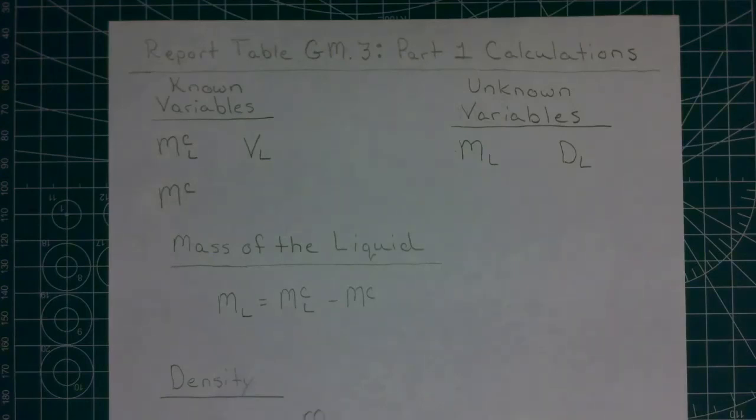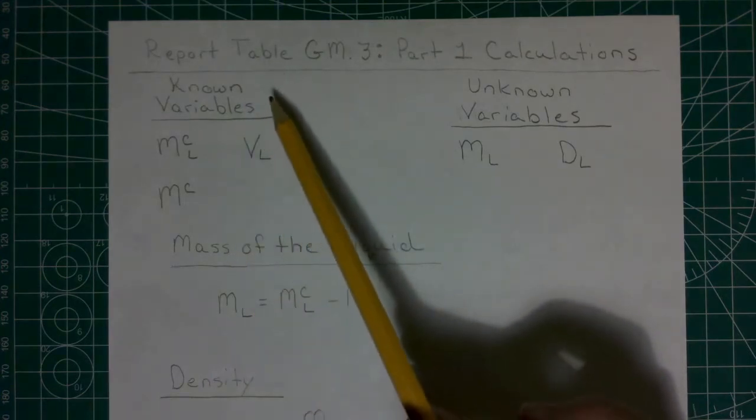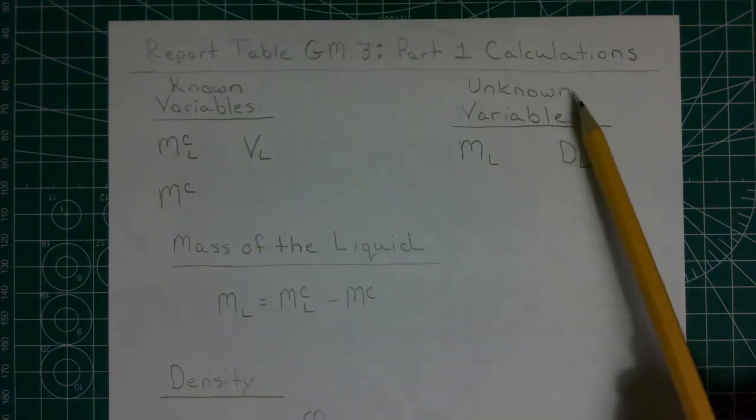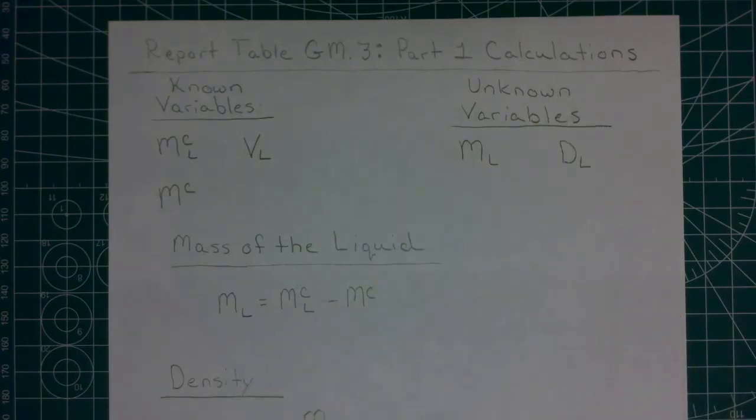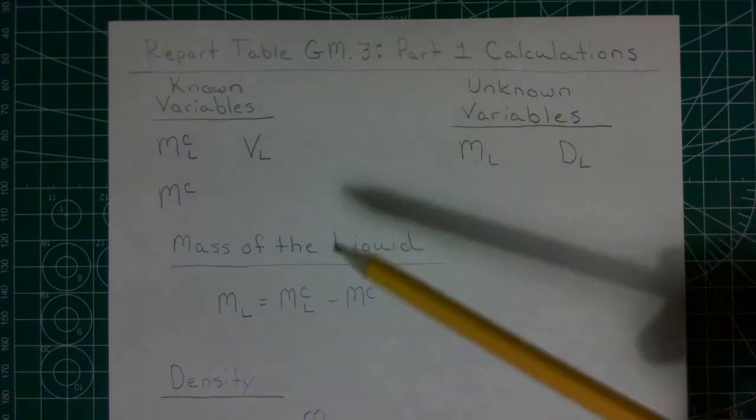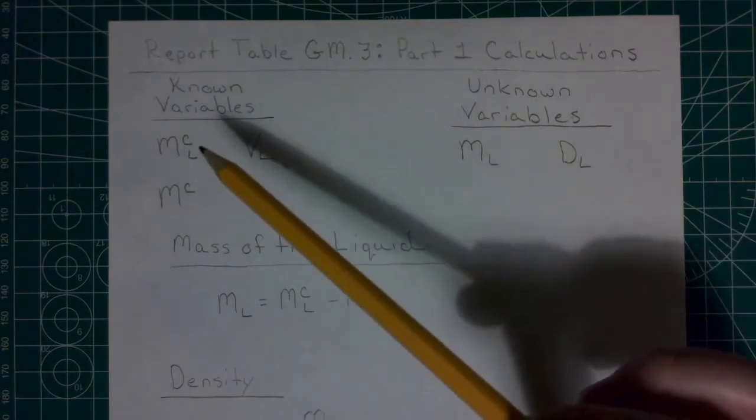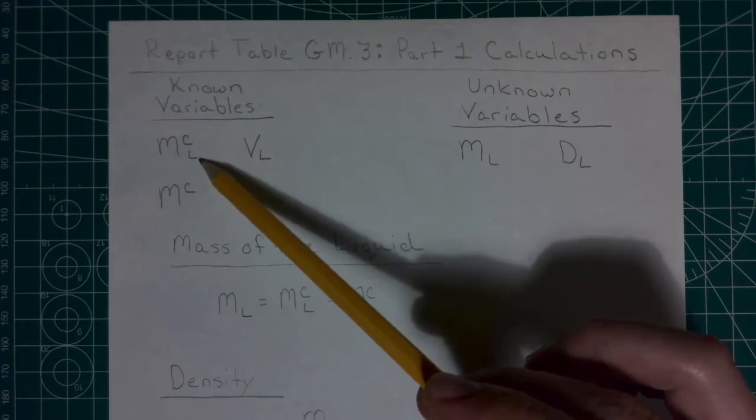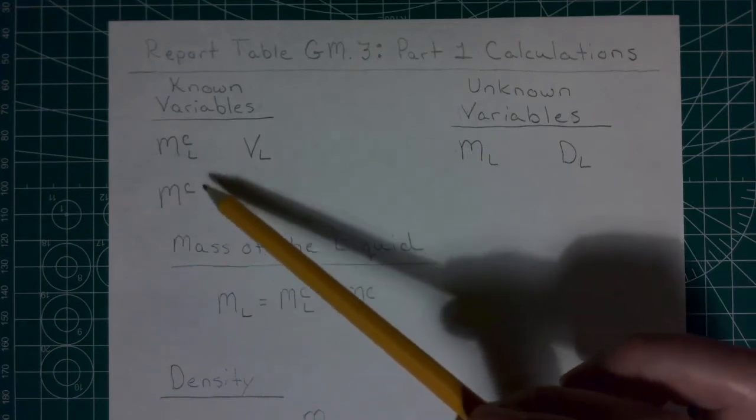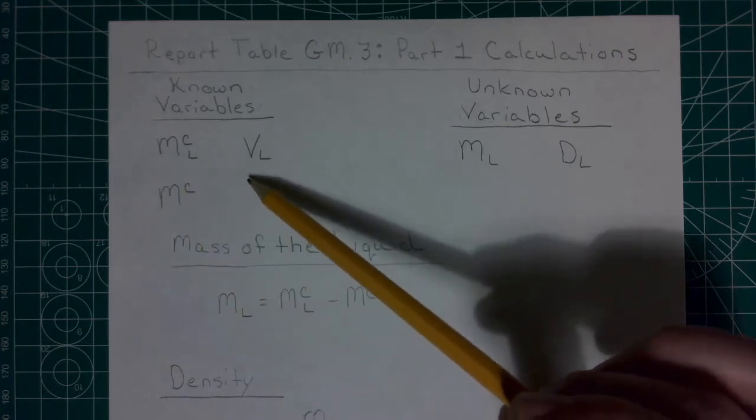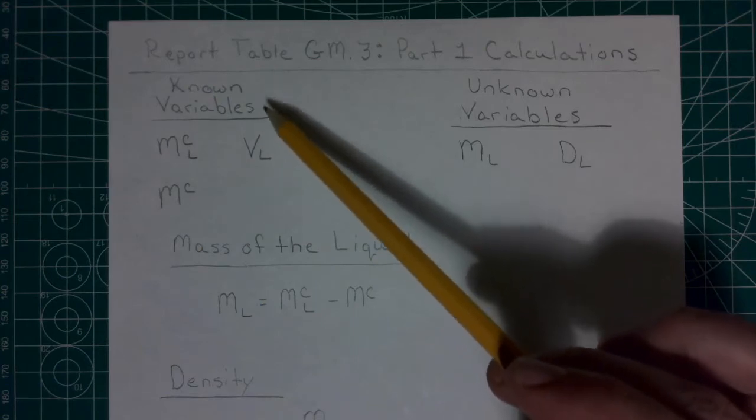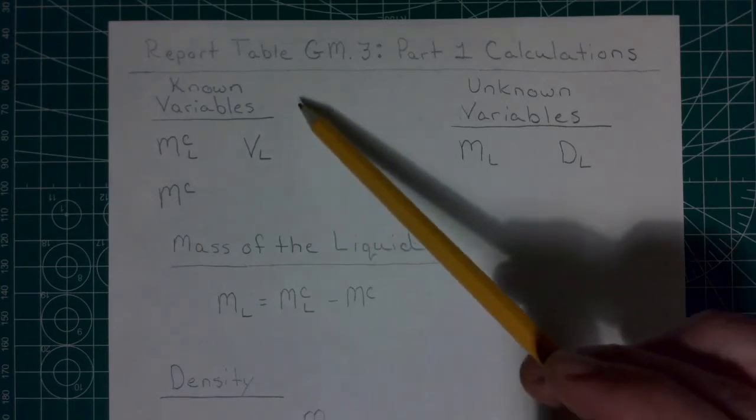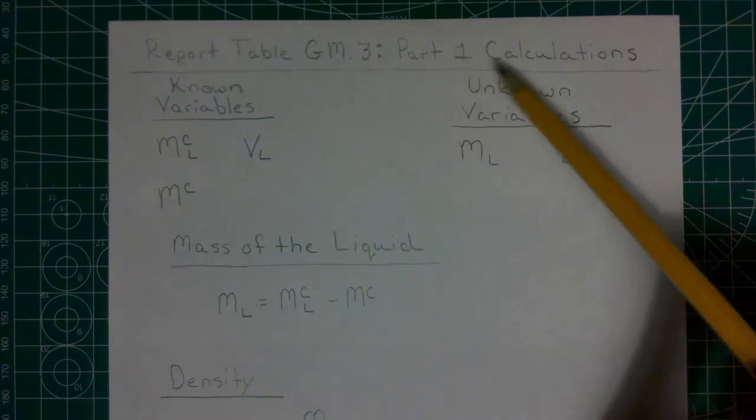One thing I want you guys to get comfortable with is going to be expressing equations with variables, and really laying out what it is that we know, or what are our known variables, versus what are the unknown variables that we need to figure out whenever we're doing problems or working through chemical issues. In this case, we're going to have the mass of the cylinder plus the liquid, the mass of the cylinder alone, and the volume of the liquid as our known variables. These are measurements that we made that are going to get automatically populated in report table GM.3 part 1 calculations.